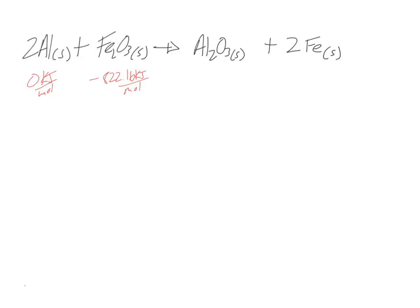Any element in its standard state has an enthalpy of formation of zero. So aluminum has an enthalpy of formation of zero, and iron has an enthalpy of formation of zero. I've written in the enthalpies of formation for the iron three oxide and the aluminum oxide as well.